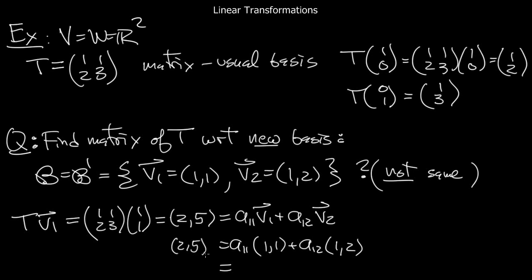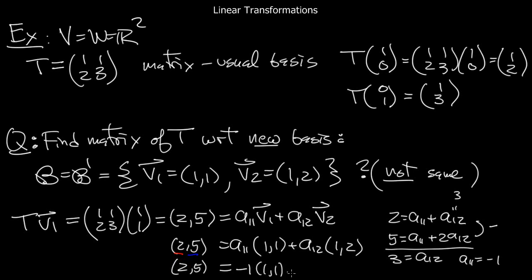And I need to solve this for a11 and a12. I'm trying to find these which make this equal to (2,5). That's not so hard. If you look at the first coordinate, you see that a11 plus a12 had better be equal to 2. And you also see that 5 had better be equal to a11 plus 2a12. And that's a 2 by 2 system. You solve it. If you subtract the two equations, you get that a12 is equal to 3. And from the first equation, you see that a11 is equal to minus 1. So the conclusion is that (2,5) is equal to minus V1 plus 3 times V2.